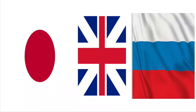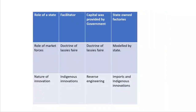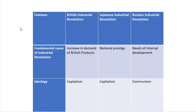In this video I'm going to explain the differentiation of different features of industrial revolution — for example, the fundamental causes of industrial revolution in these three different countries, the ideology behind the emergence of industrial revolution in each country, the role of the state, the role of market forces, and finally the nature of innovation as part of this industrial revolution. So let's go to the features.